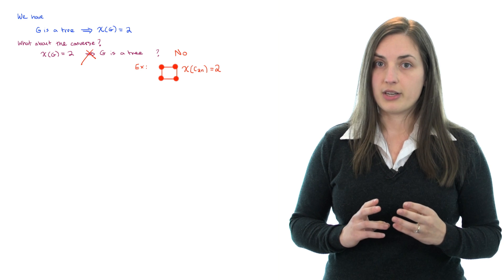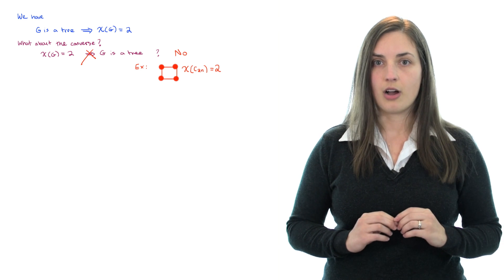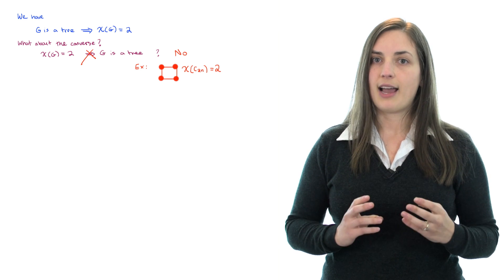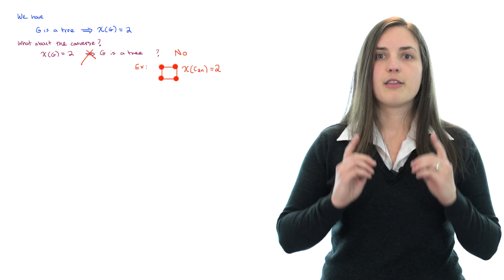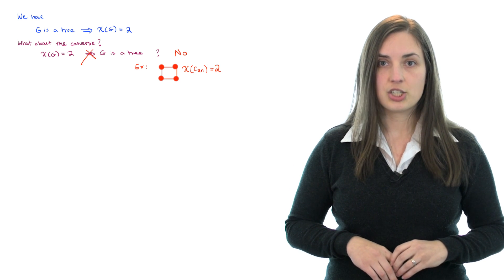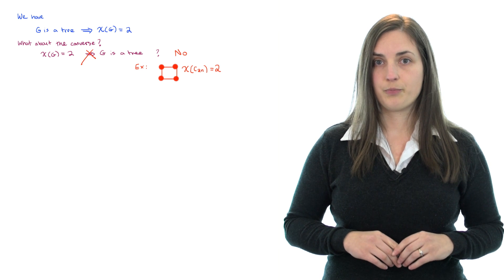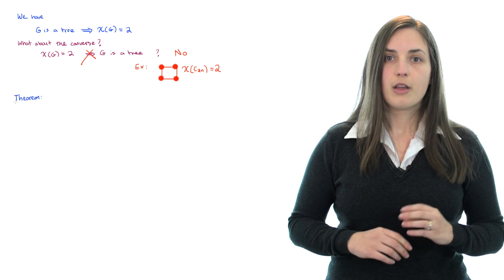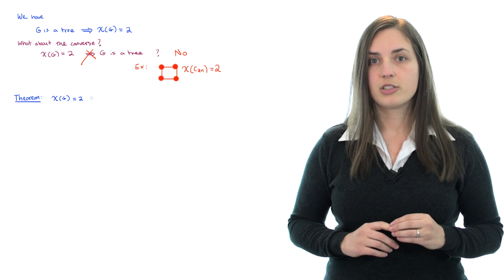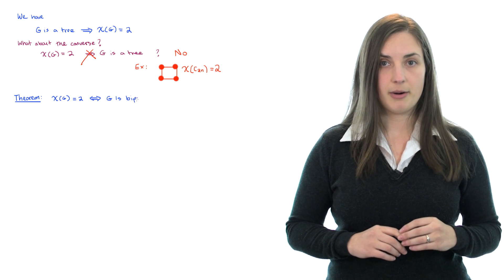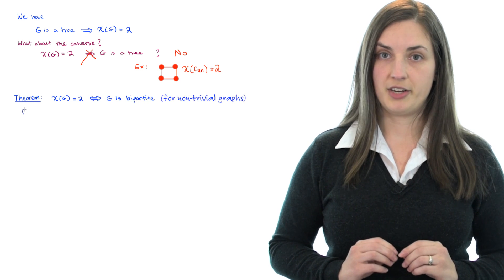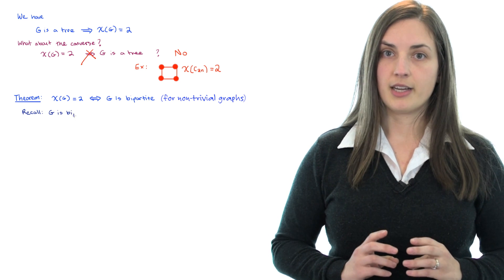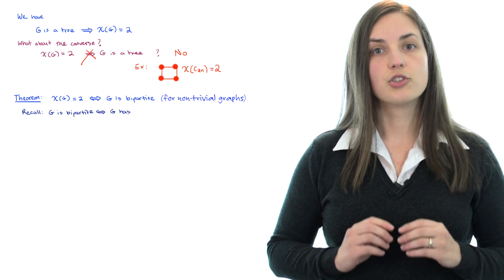But you may have noticed, in the proof that we just saw, that a tree is in fact bipartite. And this turns out to be the characterization of what makes the chromatic number equal to 2. So we have the following theorem: the chromatic number of a graph is equal to 2 if and only if the graph is bipartite. We've seen in a previous video that a graph is bipartite if and only if it has no odd cycle.